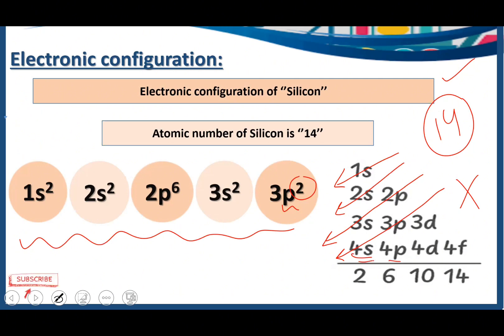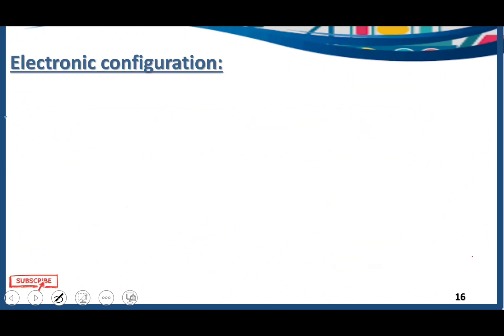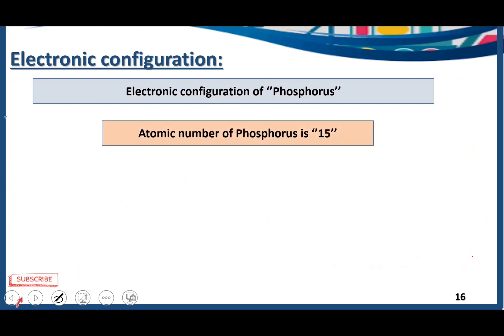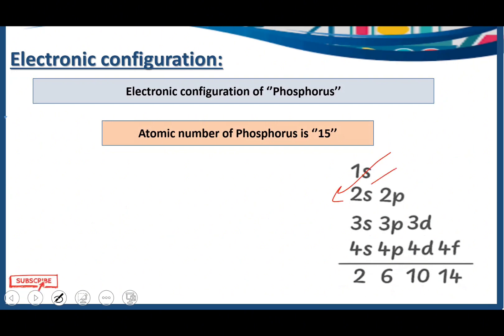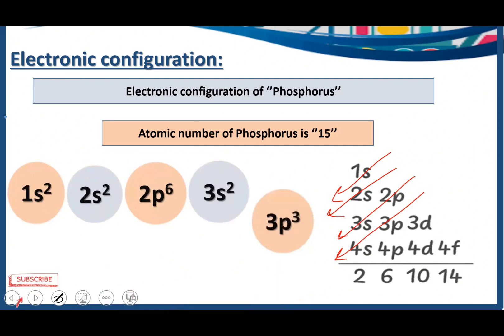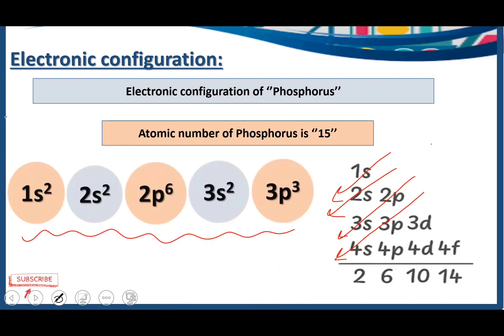The same rule applies to the s, p, d, and f subshells — each has a maximum. Electronic configuration of phosphorus — atomic number 15. We write 1s2, 2s2, 2p6, 3s2, 3p3. Counting: 2+2=4, 4+6=10, 10+2=12, 12+3=15. In the p subshell we accommodate 3 electrons. The electronic configuration of phosphorus is 1s2, 2s2, 2p6, 3s2, 3p3.